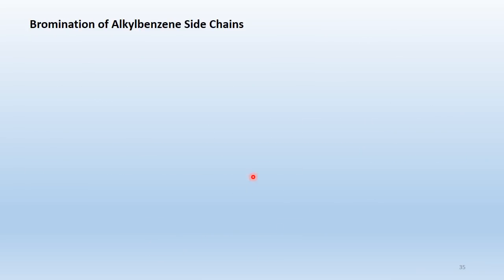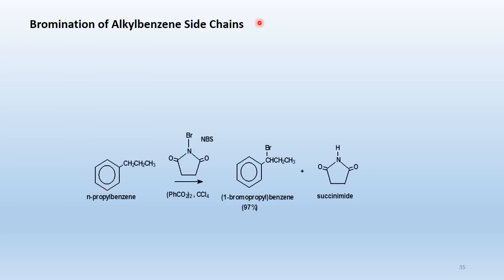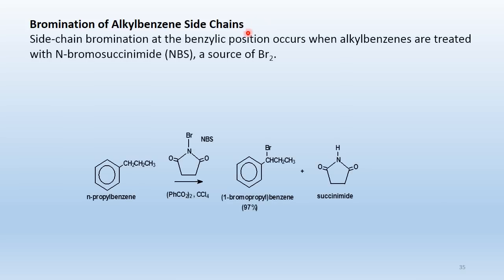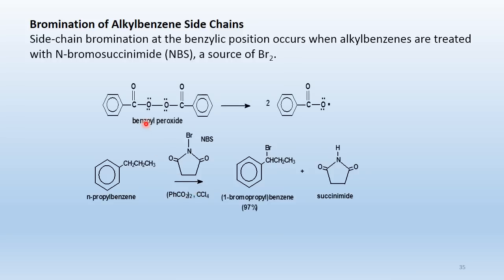Bromination of alkylbenzene side chains: side-chain bromination at the benzylic position occurs when alkylbenzenes are treated with N-bromosuccinimide (NBS) as a source of bromine and benzoyl peroxide as an initiator.